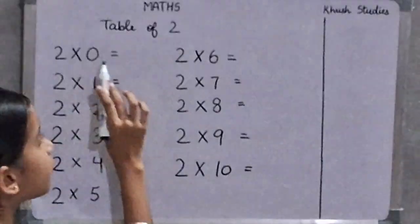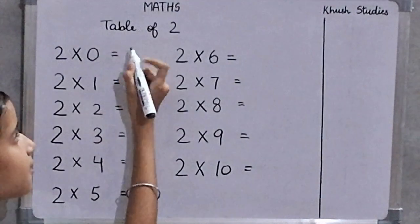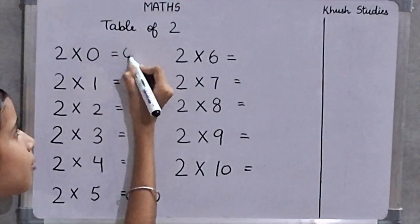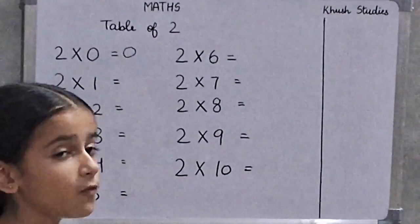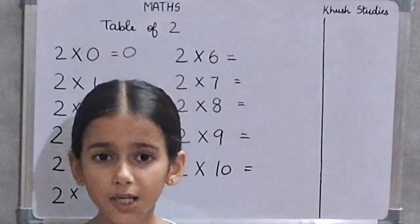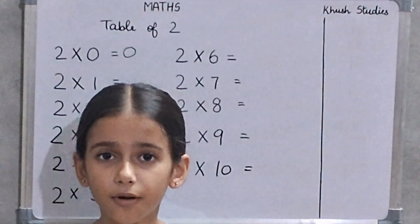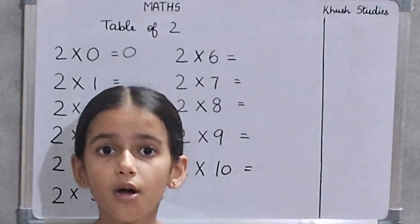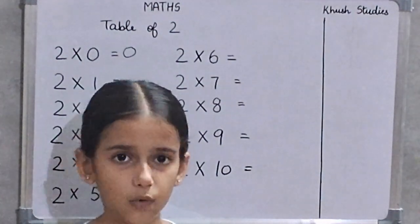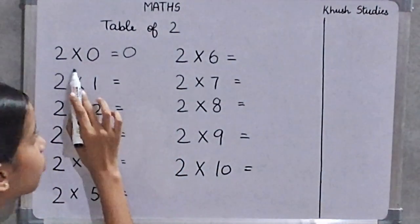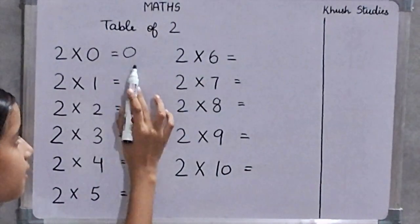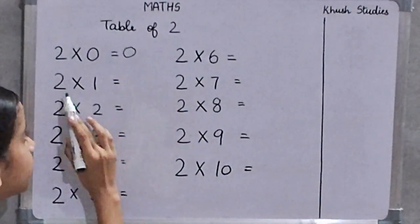2 zeros are 0. When we multiply a number with 0, the answer is always 0. So, 2 zeros are 0.